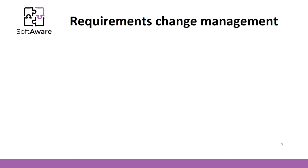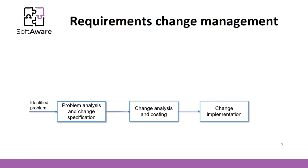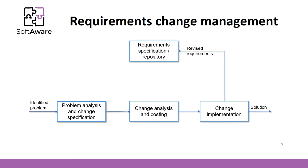Requirements management usually works like this. If we identify a problem or additional need from a client, the analysis and specification processes are initiated. Then, the change analysis is performed and new pricing is prepared. The next step is to change requirements and implementation. Here, we obtain the solution and the new, reviewed requirements are stored in some kind of requirements repository. If a new problem appears again, the initial requirements are those that were previously changed. This way, we always have the latest requirements and we can track the history of requirements changes.